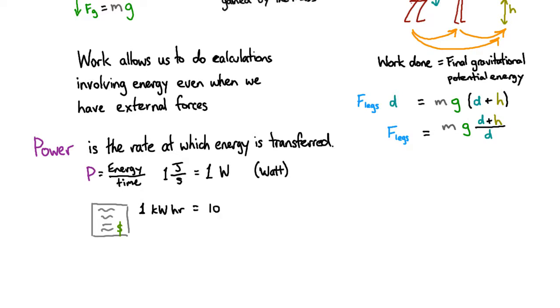So a kilowatt is 1,000 watts, a watt is a joule per second, and an hour is 3,600 seconds. So then you cancel the seconds, and you end up with 3.6 million joules, which is a unit of energy. So it looks like it's got watts in it, but because we're multiplying by a time, power times time is an energy.